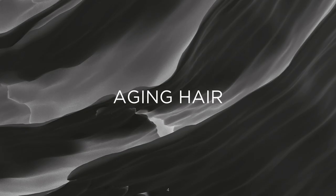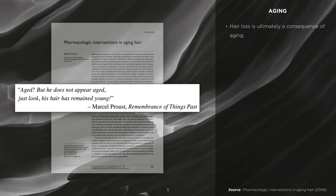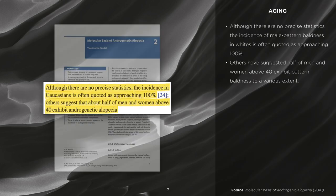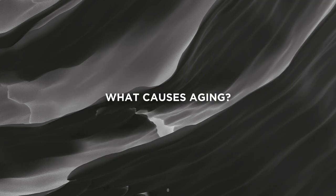Aging hair: hair loss is ultimately a consequence of aging. Although there are no precise statistics, the incidence of male pattern baldness in whites is often quoted as approaching 100%. Others have suggested that half of men and women above 40 exhibit pattern baldness to some extent. This inevitably leads to the question of what causes aging.